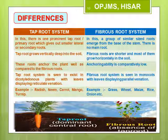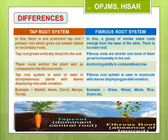The second type is the fibrous root system. In this type, a bunch of thin fiber-like roots arise from the base of the stem. There is no main root here as all roots are similar in size; these are known as fibrous roots. Grass, maize, wheat, onion, and rice are common plants with fibrous root system.